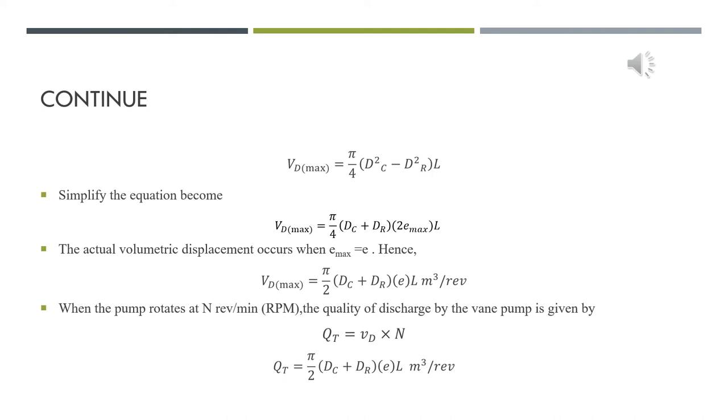The quality of the discharge by the vane pump is equal to the volumetric displacement, which is π/2 times (the diameter of the cam ring plus diameter of the rotor) times the eccentricity times the width.